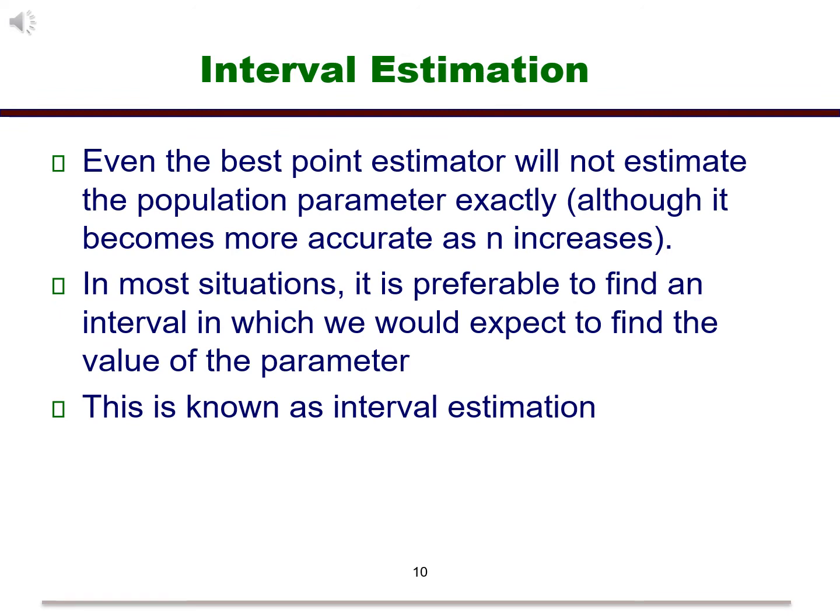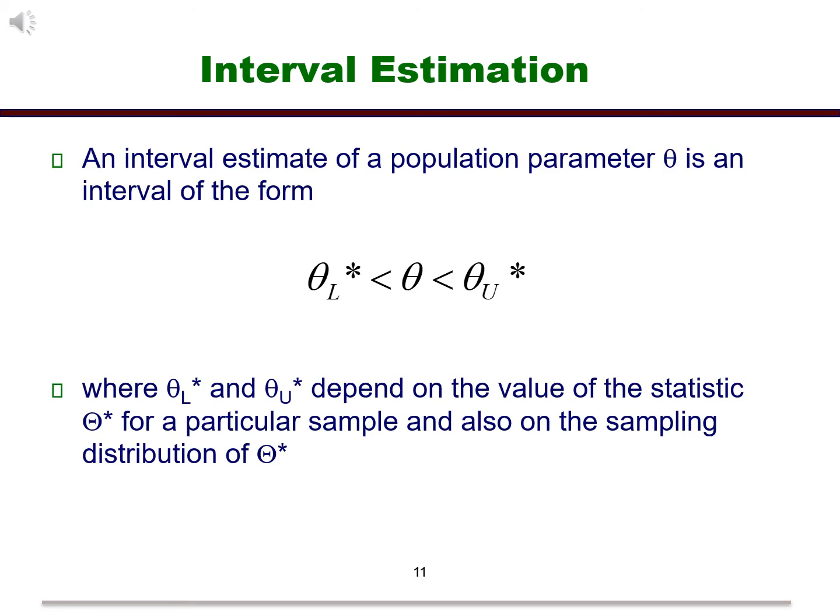A point estimate by itself does not tell the whole story. Recall that an estimate does not give us any idea just how precise our estimation process is. We will rectify this by including the standard error in creating something called an interval estimate. Confidence intervals themselves are a type of interval estimate. An interval estimate of a population parameter is of the form given in the slide. The bounds of the interval are dependent upon the value for the estimate and the standard error. It also depends upon the sampling distribution of the statistic in question.